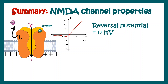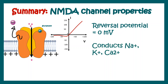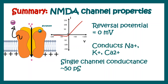As a summary for NMDA receptors: the reversal potential is 0 millivolts. They conduct sodium, potassium, and calcium, and the single-channel conductance is 50 picosiemens. NMDA receptors give rise to sustained currents compared to AMPA or kainate. AMPA and kainate show very fast opening and closing kinetics, whereas NMDA shows fast opening but sustained or delayed closing kinetics.